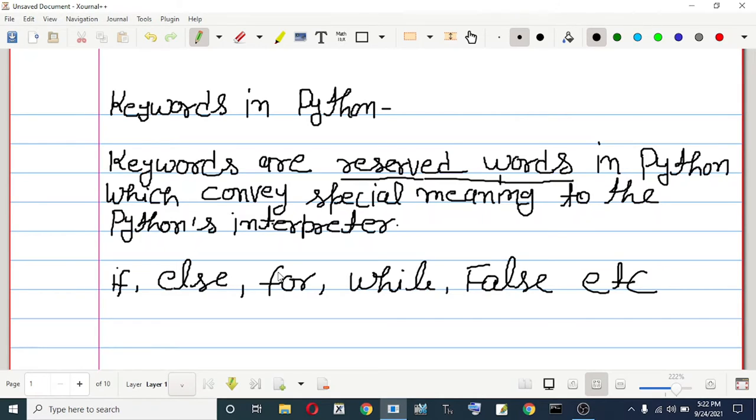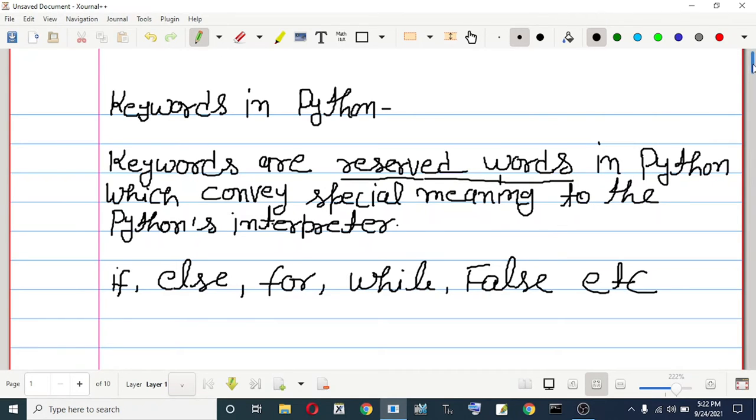These words cannot be used as normal identifiers. For example, if you try to define while equals 13, the interpreter will throw an error because while is a keyword in Python and you cannot use while as an ordinary variable or ordinary identifier.